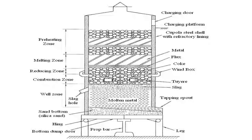There are five important zones in the cupola furnace: well zone, combustion zone, reducing zone, melting zone, and preheating zone. The well zone is the space from the sand bottom up to the level of the tuyeres and the top surface of the slag. The combustion zone is located between the upper level of the tuyeres and the wind box.